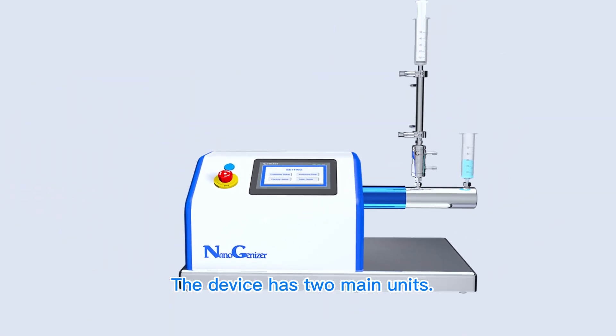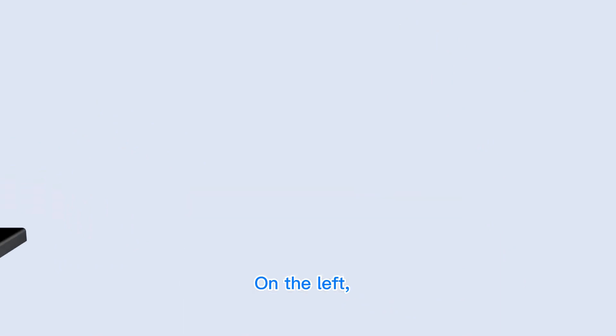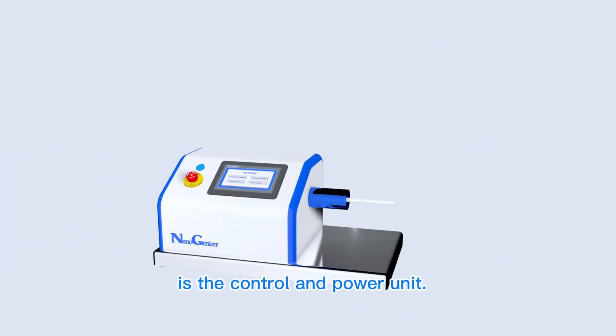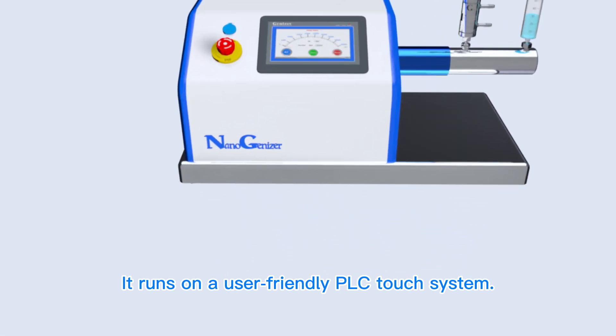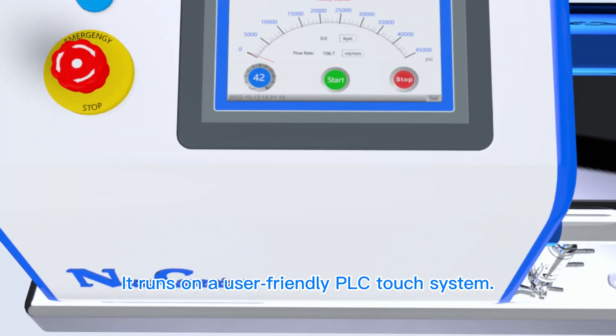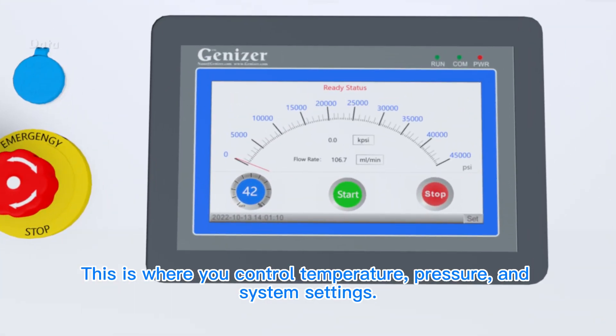The device has two main units. On the left is the control and power unit. It runs on a user-friendly PLC touch system. This is where you control temperature, pressure, and system settings.